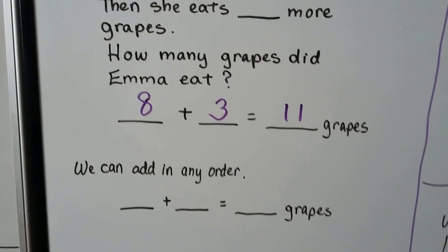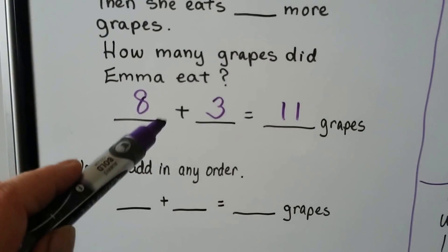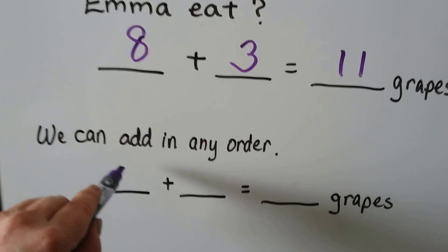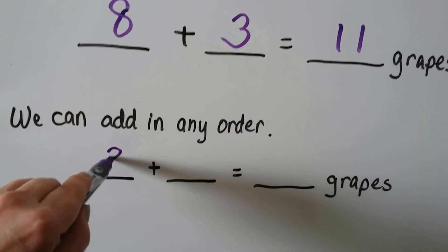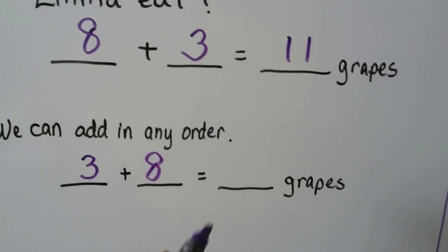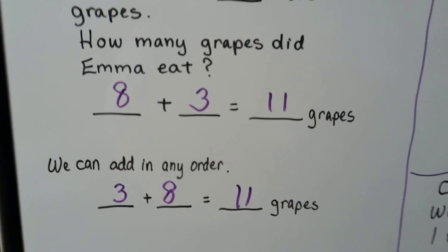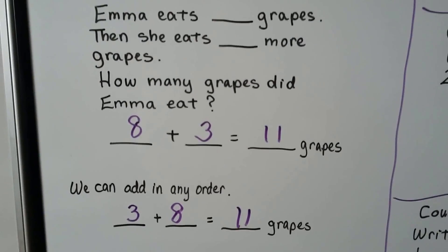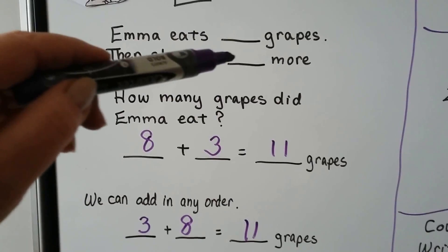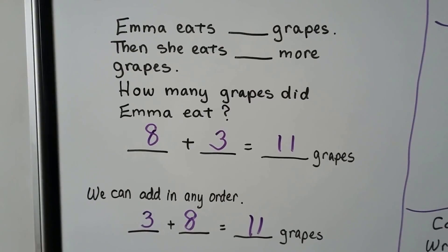We can add in any order, so we don't have to have 8 plus 3. We could also change the order and do 3 plus 8 — it'll still equal 11. Both ways would be correct: 8 and then 3, or 3 and then 8, because we can add in any order.